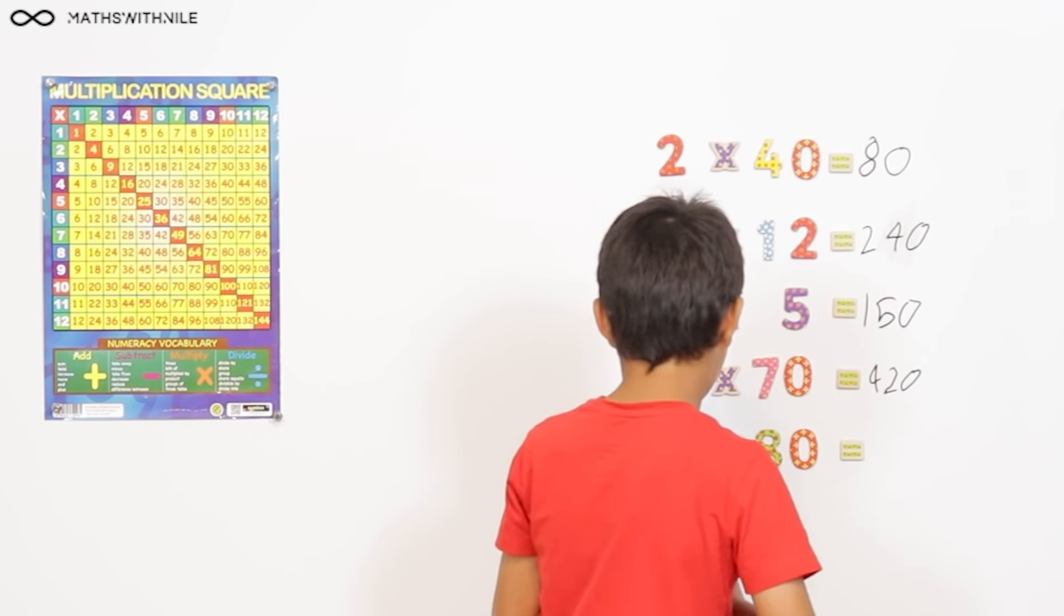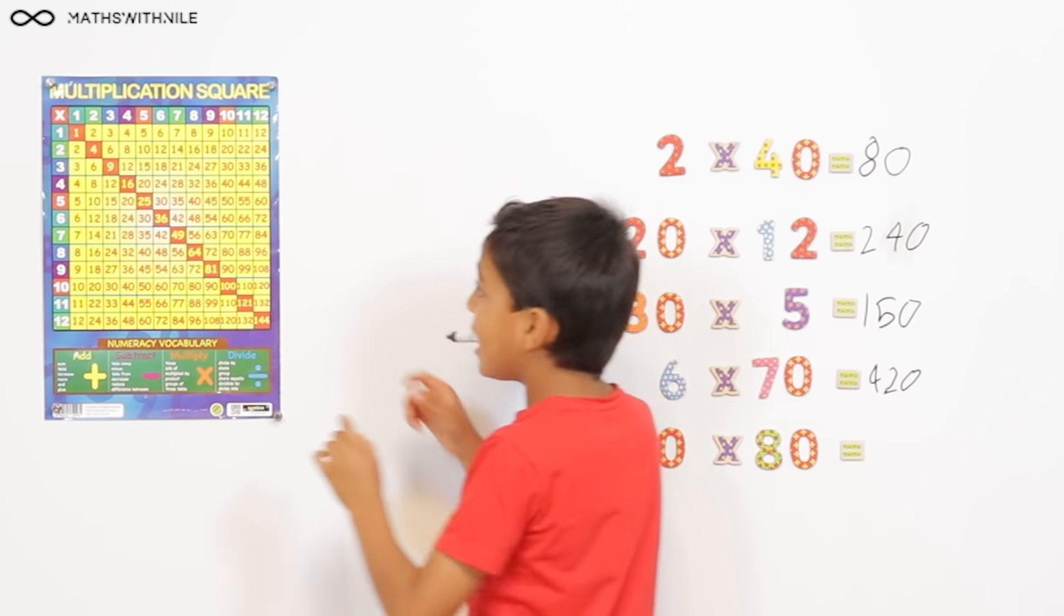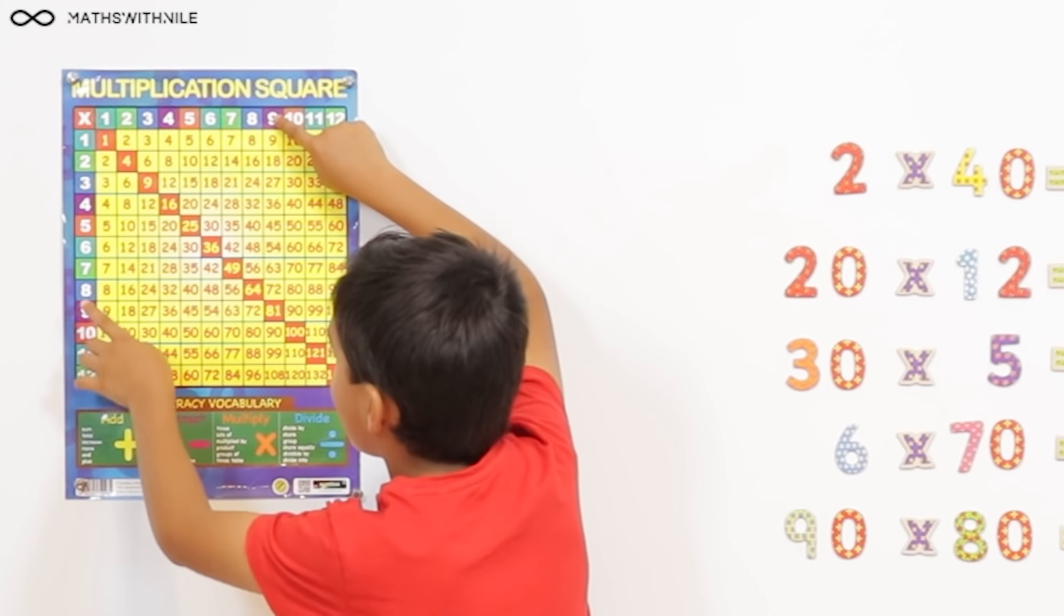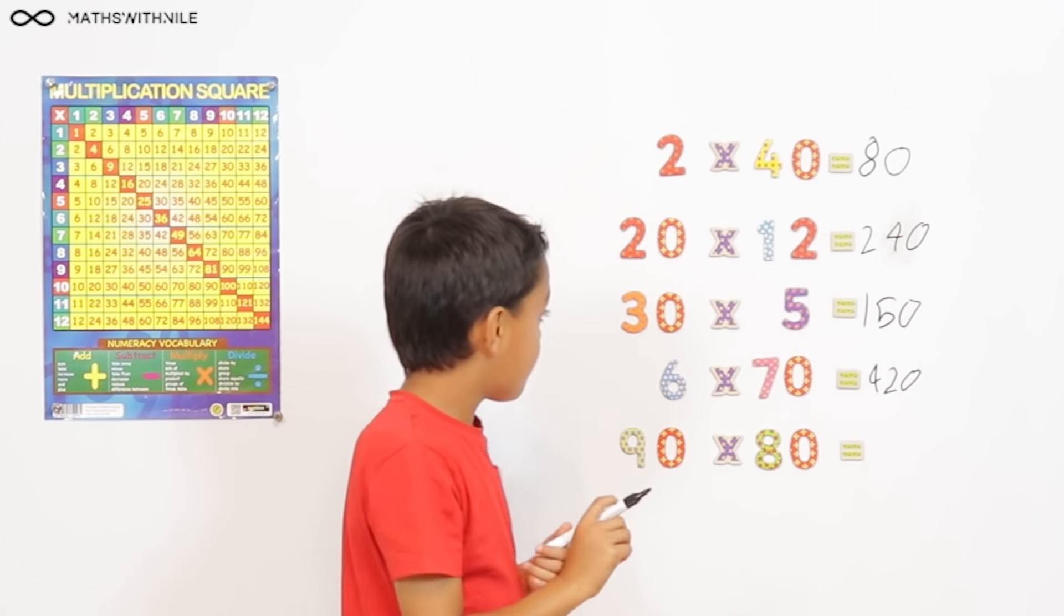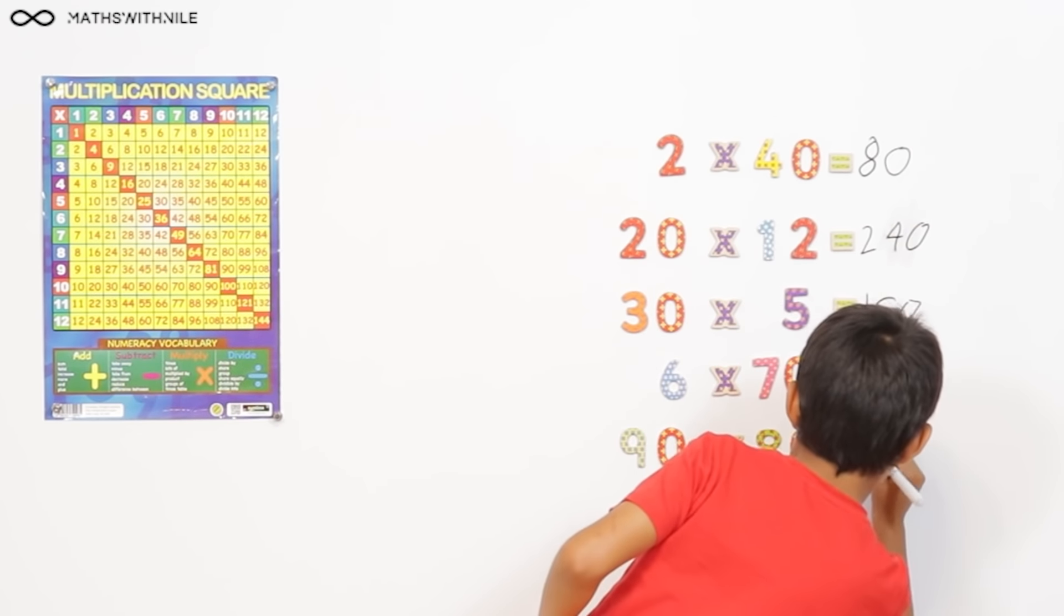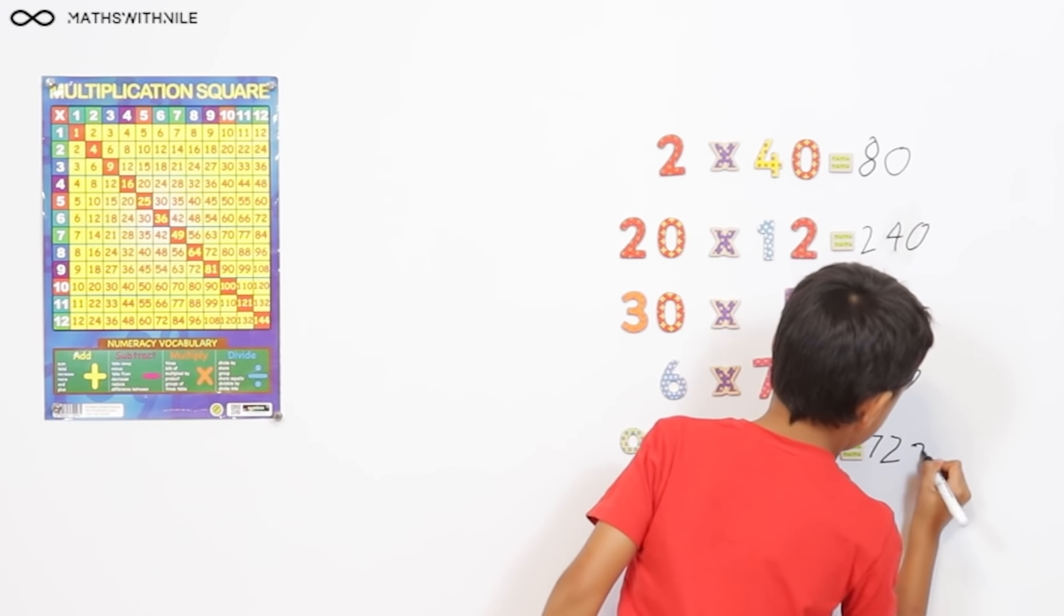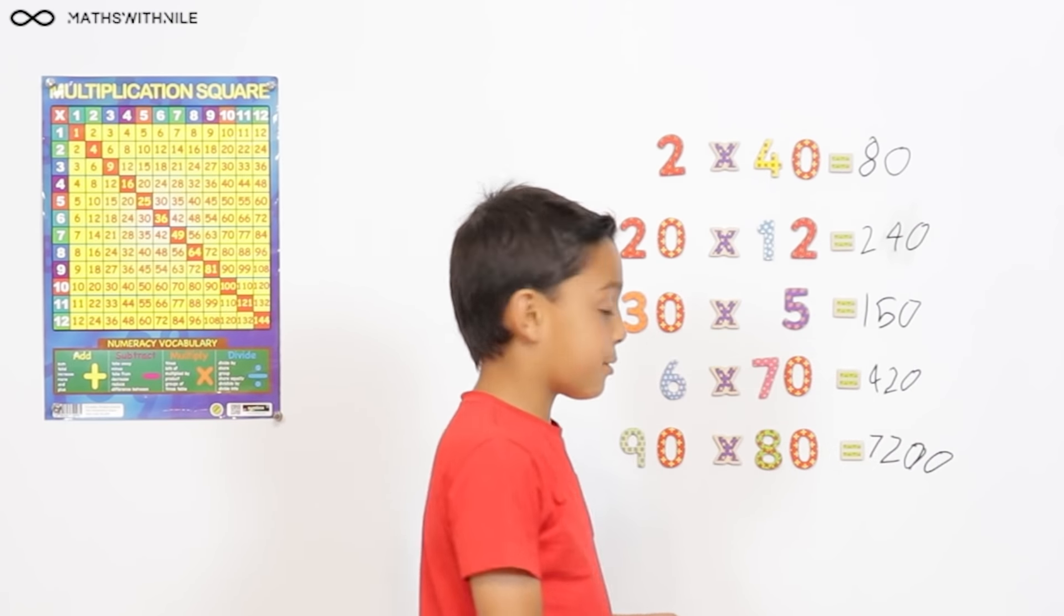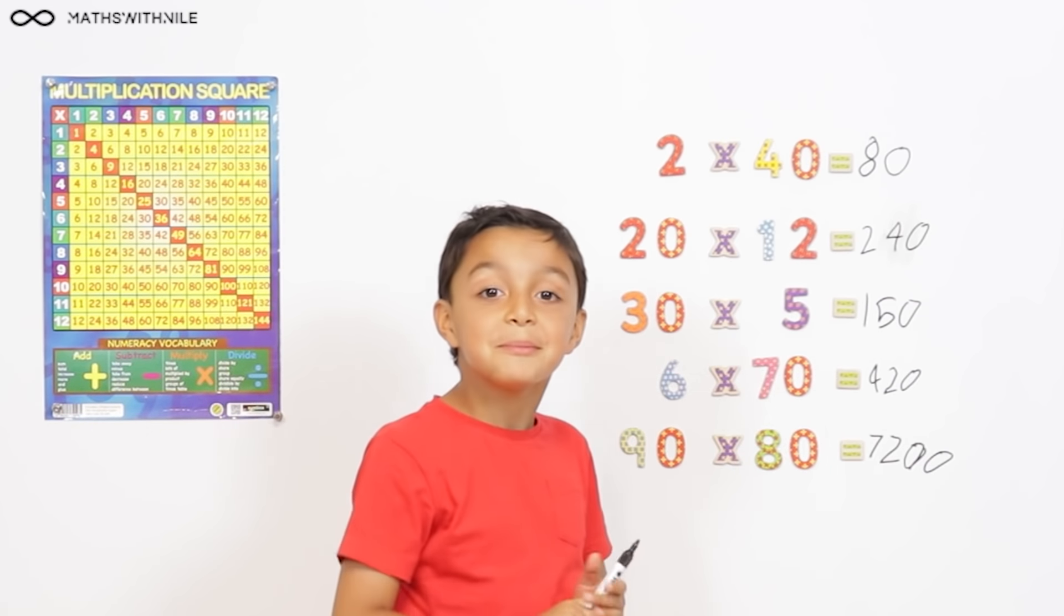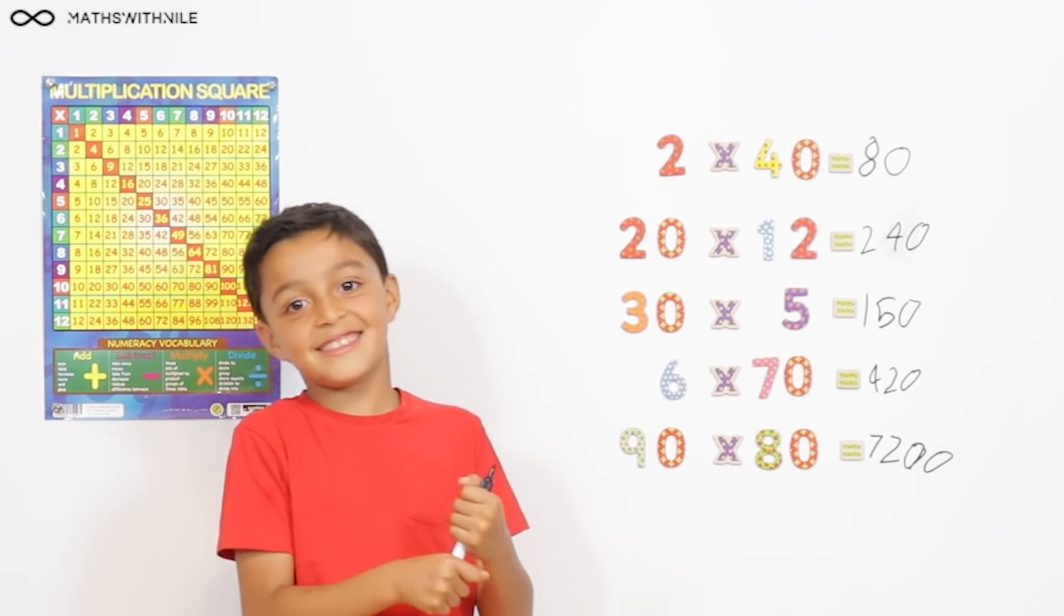And then 90 times 80. 9 times 8 equals 72. And then add the two 0s. Equals 7,200. Very good. Or 7,200. I was wondering if you were going to remember about the two 0s. Yeah. Very good, Niall. Well done.